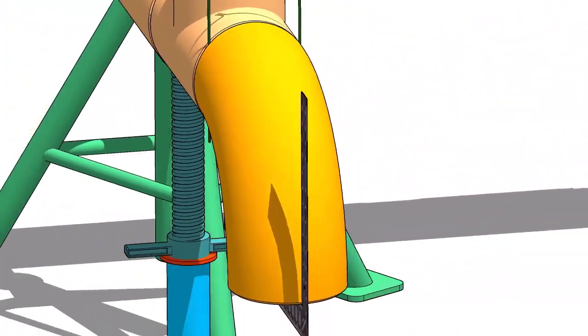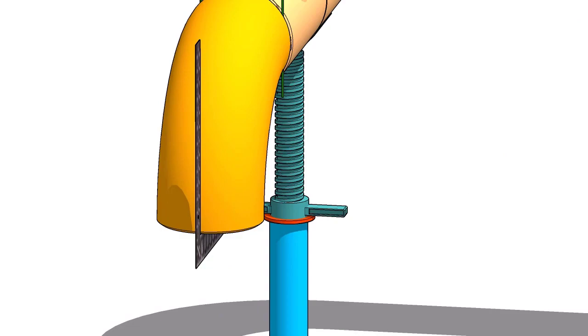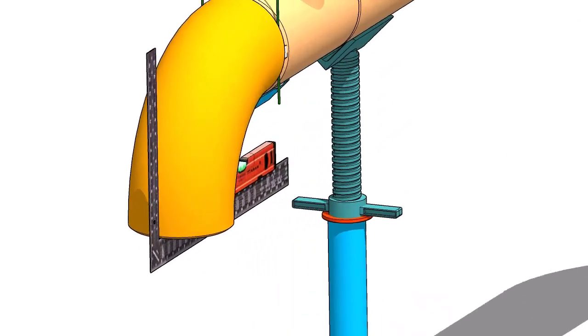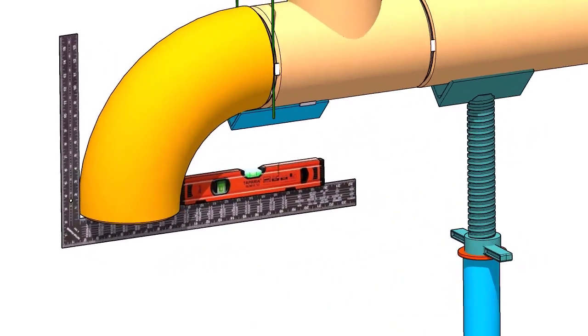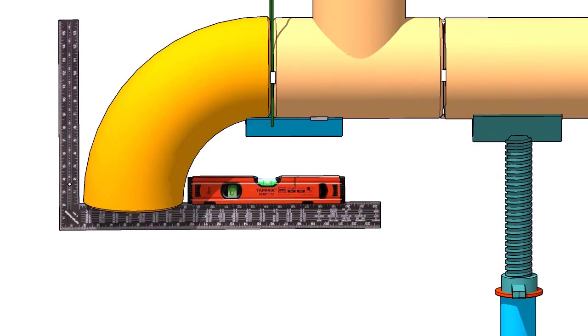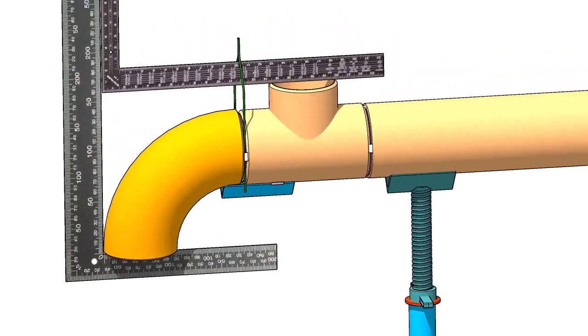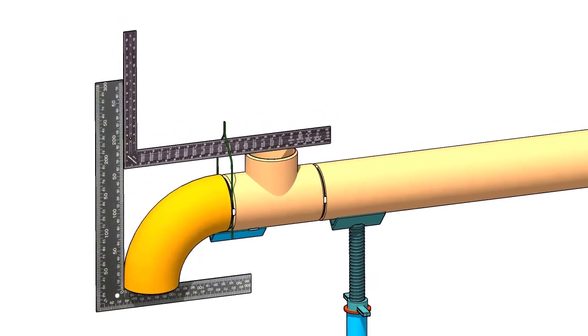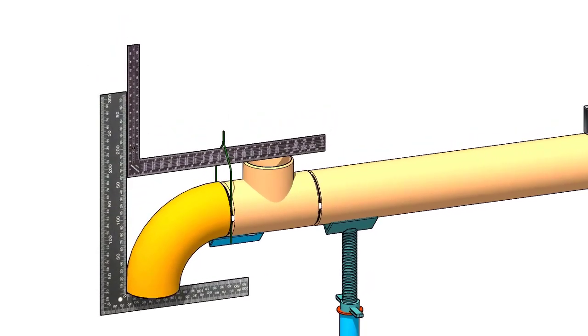Rotate the right angle and the spirit level longitudinal and maintain the elbow face level. Check the branch face and the elbow face are right angle to each other.